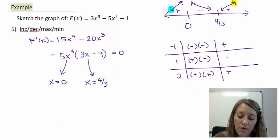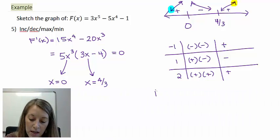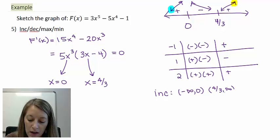So this tells us that our graph is increasing between negative infinity and 0 and between 4/3 and infinity. It's decreasing between 0 and 4/3. It also tells us that it has a maximum when x = 0.